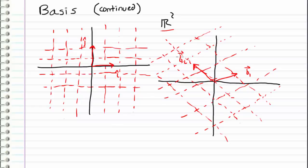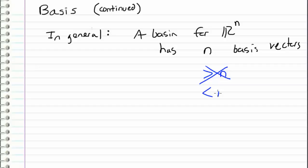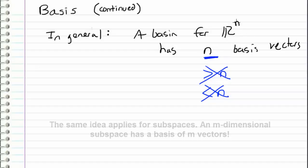So in general, a basis for a vector space R^n, so an n-dimensional vector space, a basis for that has n basis vectors. If we had greater than n vectors, then this would mean that we are including linearly dependent vectors. So we can't have greater than n, and we also can't have less than n, because otherwise our basis would not span all of R^n. So that's why we have to have n basis vectors if we want a basis for R^n.